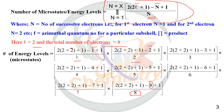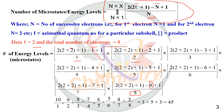The total number of microstates is 45, just equal to the d2 system. So it is also proved here that d2 is equivalent to d8 in terms of number of microstates — we can arrange these electrons in 45 possible ways.